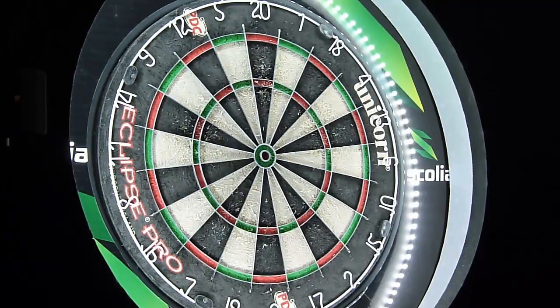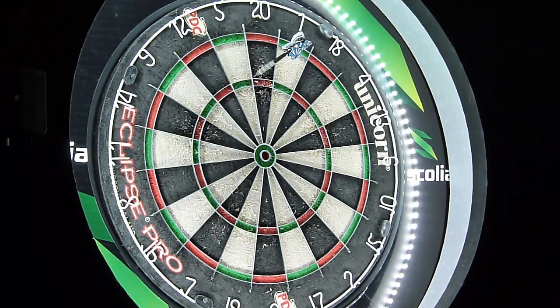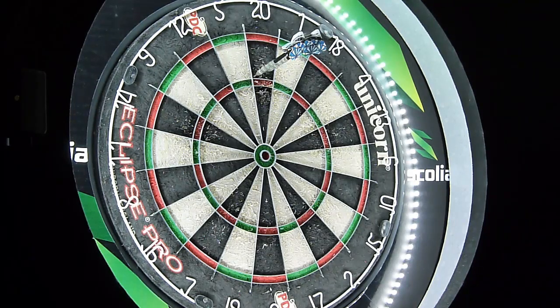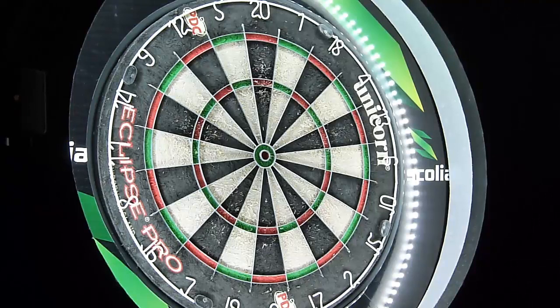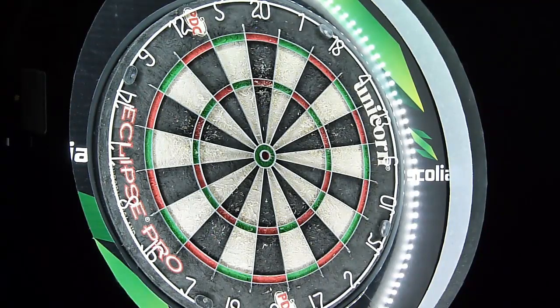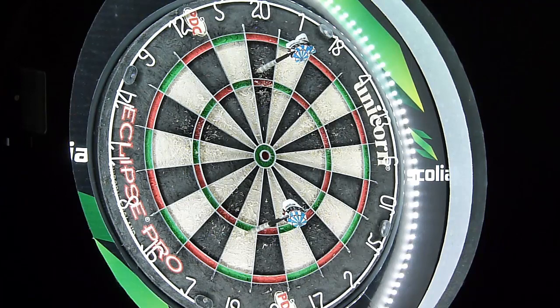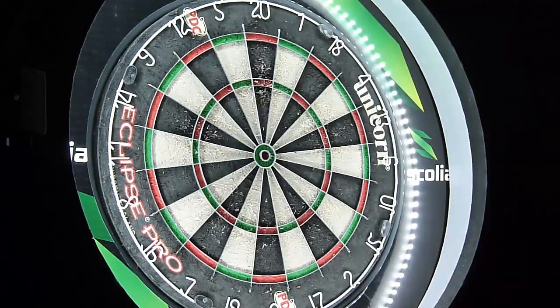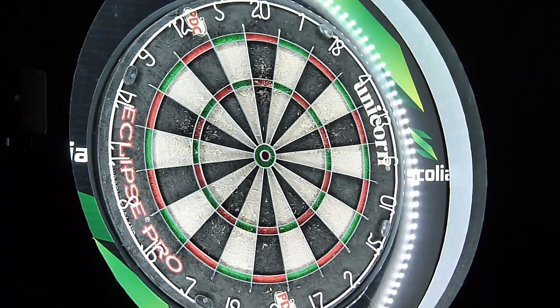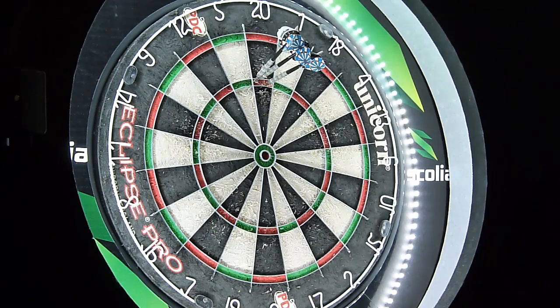Let's try these Nick Kenny Darts out see if I can throw them. Very nice and straight. Fifty five. Fifty eight. Does it feel heavier than 21 grams? I think it's because of the shape. Shorter, a little bit fatter. Get it. 180.